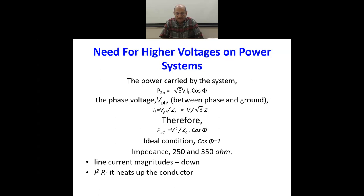We also know that V_phase — the phase voltage — is the line voltage divided by √3, meaning the voltage between the phase and the neutral. The line current would be V_phase divided by the impedance. Here we have taken Zc, which is the characteristic impedance of the transmission line. The line current works out to be V_line divided by √3 × Zc. Therefore, the three-phase power works out to be V_line² / Zc × cosφ. Under ideal conditions, we can assume cosφ = 1.